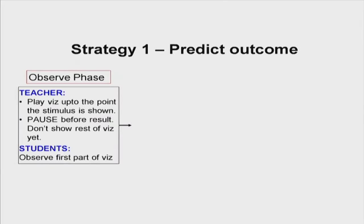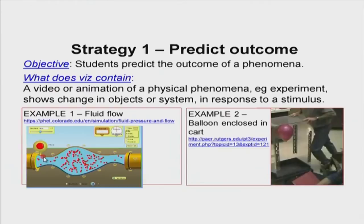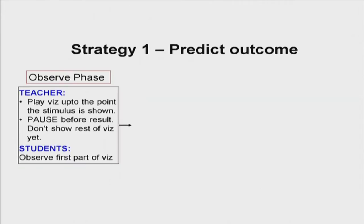In phase one — the observe phase — the teacher plays the visualization only up to the point where the problem is described and the stimulus is shown. For example, in the fluid flow problem the teacher says 'I am going to increase the fluid density' but does not actually increase it yet. In the balloon problem, the teacher plays the animation only until the man is about to move the cart — so students understand the setup. This is very important: pause and do not show the result yet. Students are observing the setup of the problem.